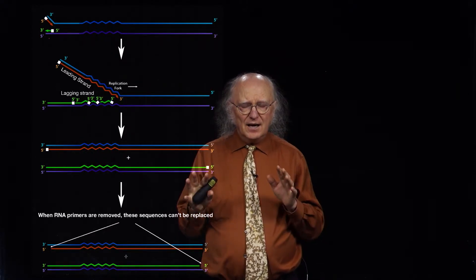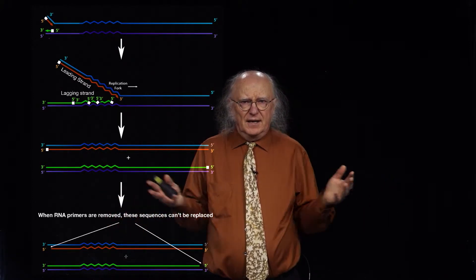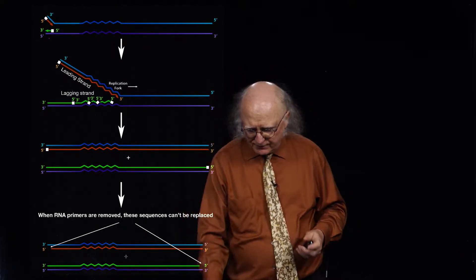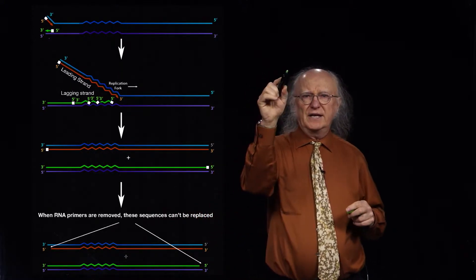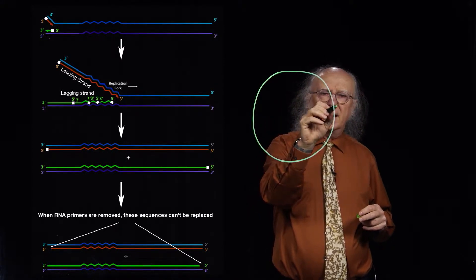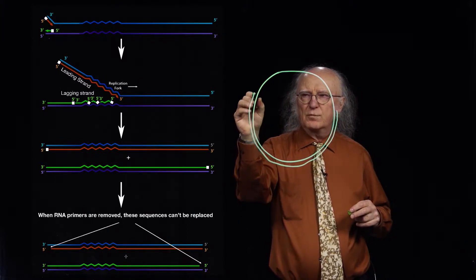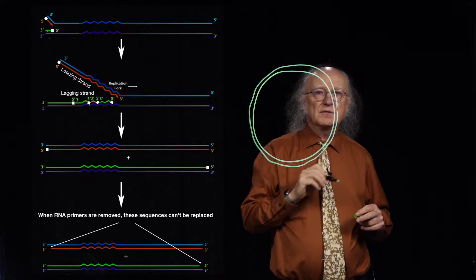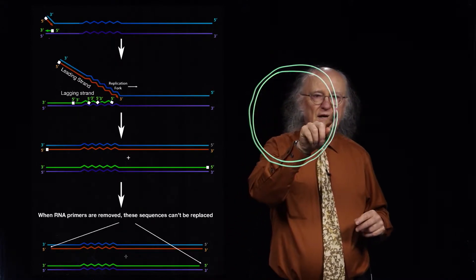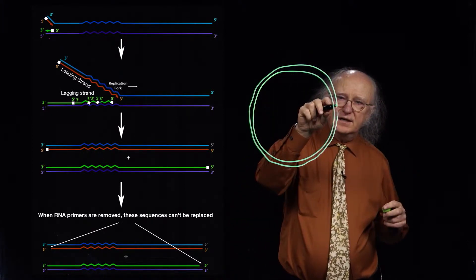That property turns out to be a very big consideration. In prokaryotic cells, the DNAs are circular. With a circular DNA, when the leading strand gets synthesized all the way around, it comes back to where it started, and the primer at the end can get removed. DNA polymerase 1 can come in and fill in the gap, and DNA ligase can seal it.